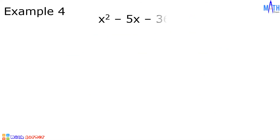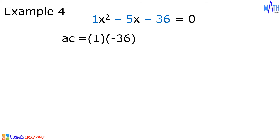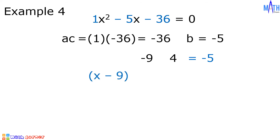Example number 4: x squared minus 5x minus 36 is equal to zero, where a is equal to 1, b is negative 5, and c is equal to negative 36. Let us multiply a and c: 1 times negative 36 is equal to negative 36. Let us find factors of negative 36 that when added equal negative 5. The factors we need are negative 9 and positive 4, since negative 9 plus 4 is equal to negative 5. So we have x minus 9 times x plus 4 is equal to zero.